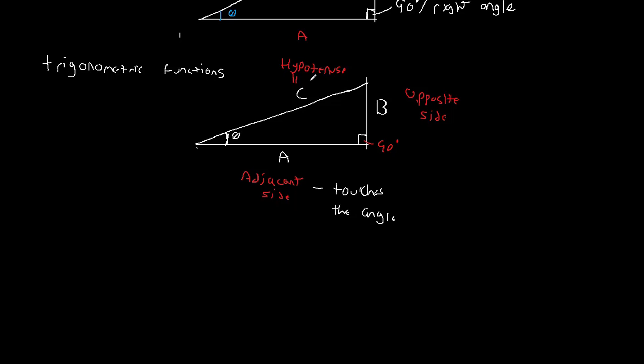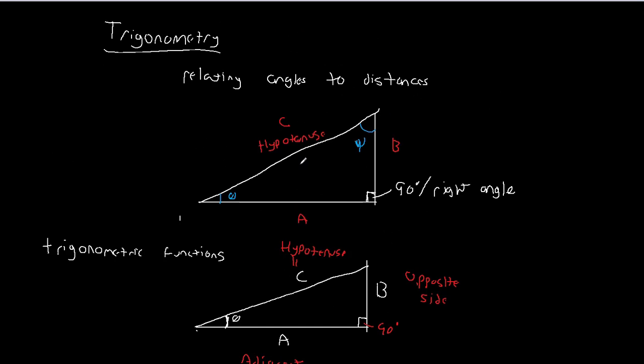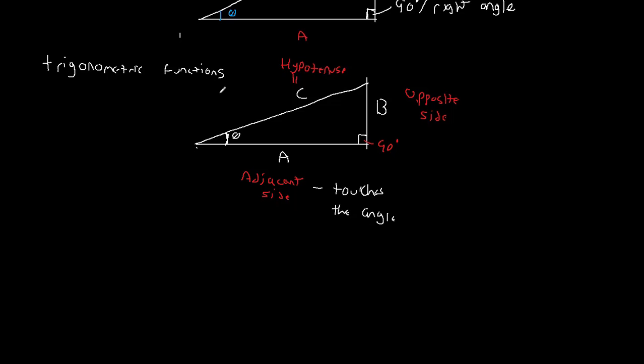So hopefully going from this designation up here to this designation down here makes sense, because this is, again, kind of critical to being able to go forward. So for the angle here, theta, we now have an opposite side, an adjacent side, and a hypotenuse. All right. So now we can use these to develop these trigonometric functions.